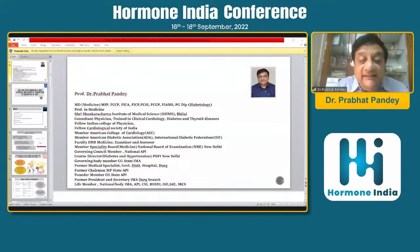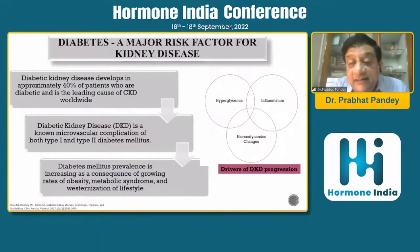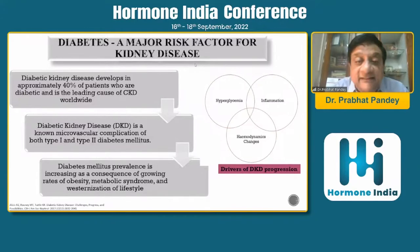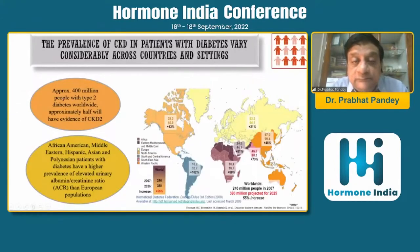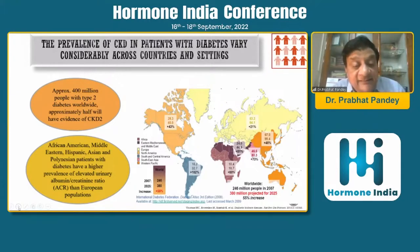Diabetic kidney disease affects almost 50% of patients with diabetes. The basic problems in diabetes are hyperglycemia, inflammation, and hemodynamic changes which cause all the problems including diabetic kidney disease. The prevalence is increasing as a consequence of growing rates, and South Asian patients with diabetes have a higher prevalence of elevated urinary albumin and subsequent diabetic kidney complications than European populations.